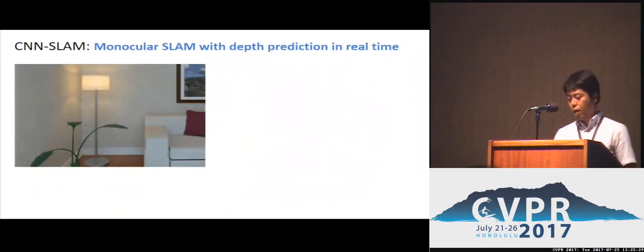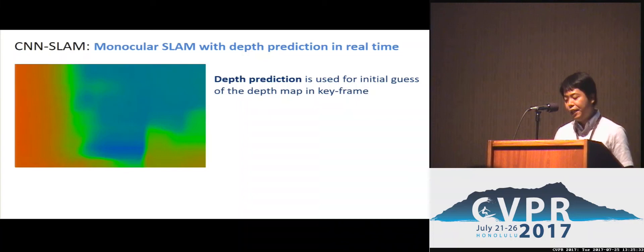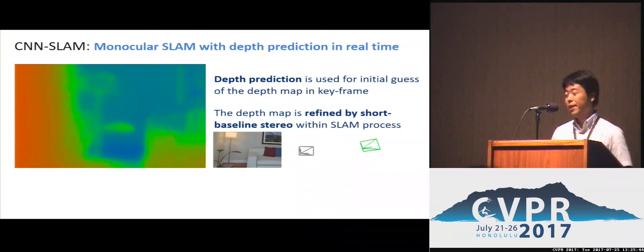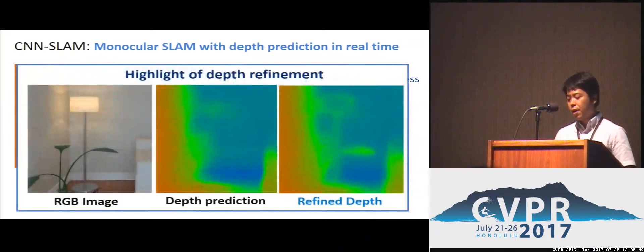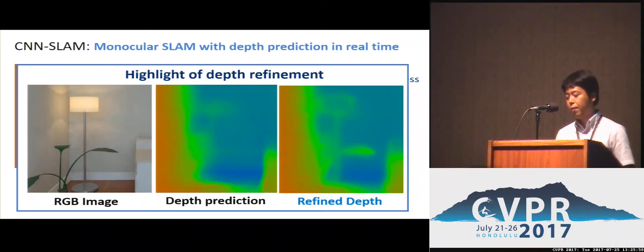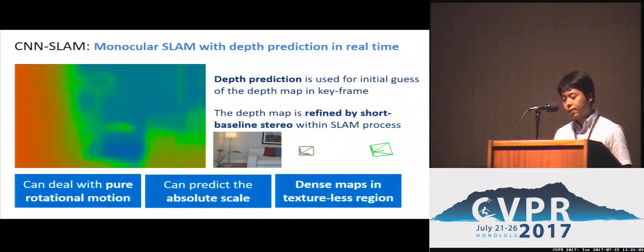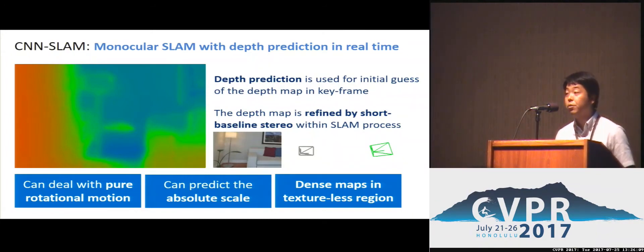In CNN SLAM, depth prediction is used as the initial guess of the depth map in each key frame. The depth map is then refined by using short baseline stereo within the SLAM process to recover detail of the shape in the depth map. Since depth prediction doesn't need motion parallax, CNN SLAM can deal with pure rotation motion and can also recover the absolute scale.